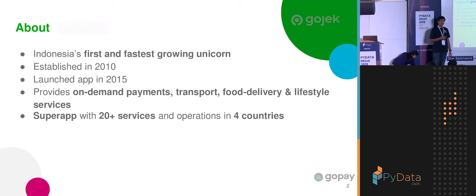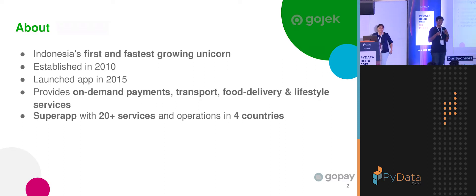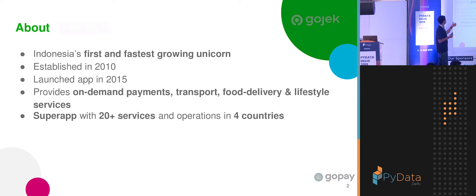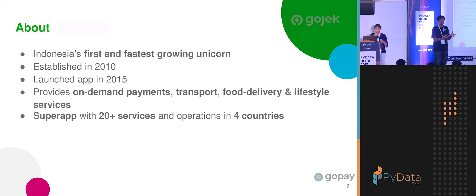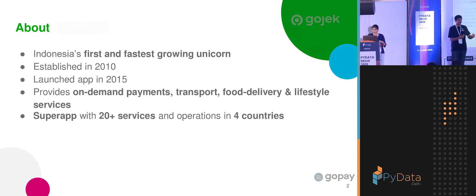GoJek was established in 2010. Initially our CEO, Nadeem Makarim, ran the whole thing by phone — he ran a call center and picked it up from there. We started out with ride hailing services, particularly on two wheelers. The word 'ojek' in the name basically means two-wheeler riding services. From ride hailing, we figured our riders could not only transport people, they could also transport food, Amazon packages, and a variety of different things. And from there, the ecosystem grew into what it is today.